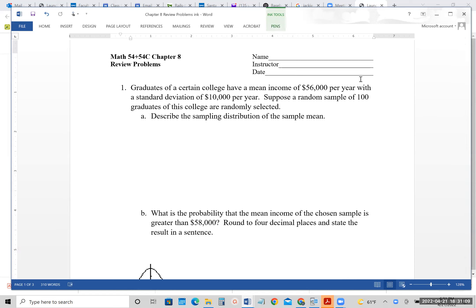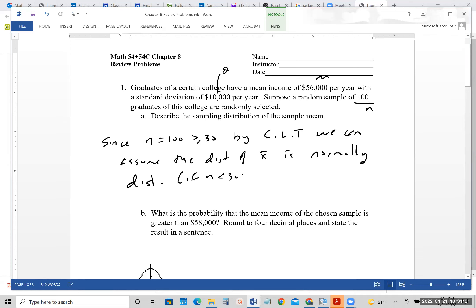Well, what we can see right here is that n is 100, your mean is 56,000, and your standard deviation is 10. So since n is equal to 100, which is greater than or equal to 30, by the central limit theorem, we can assume the distribution of x bar is normally distributed. And remember, if it's less than 30, if n is less than 30, it must say population is normally distributed. So for small sample sizes, we do need that extra little statement. So that would be Part A.